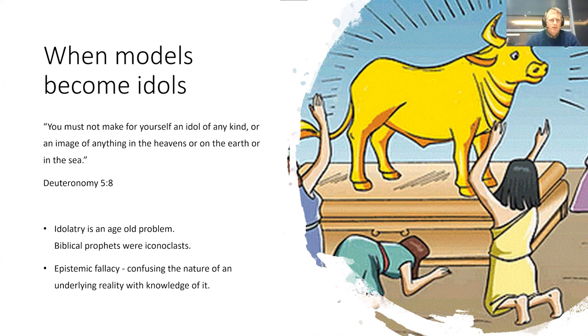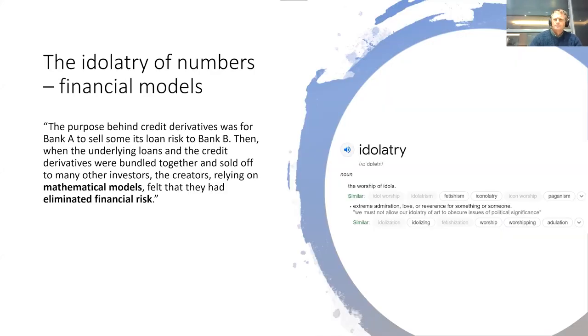The biblical prophets were iconoclasts, and that points to this epistemic fallacy - confusing the nature of an underlying reality with knowledge of it. Now ironically, text can also be used to create models. So the ban on physical models didn't solve the idolatry problem, and it's still a problem to this day.